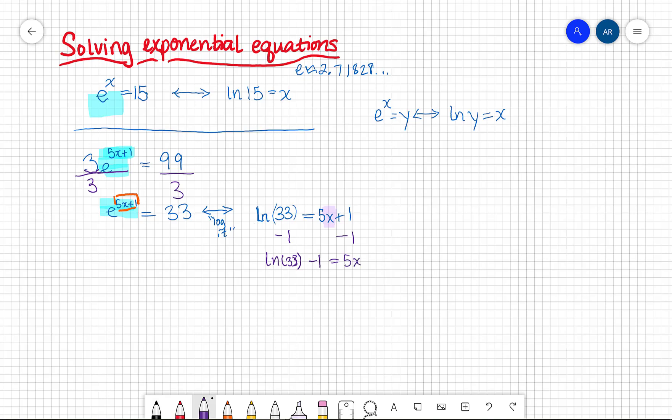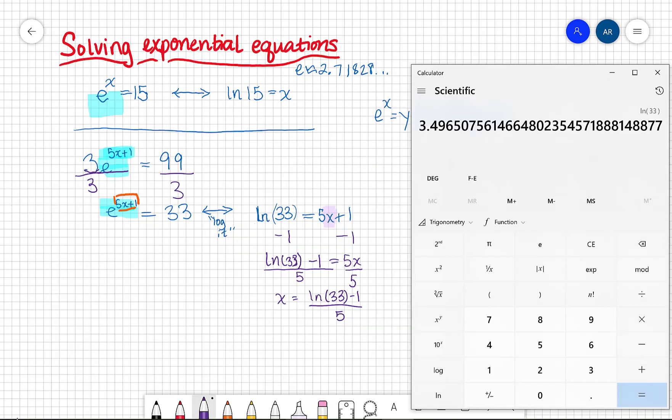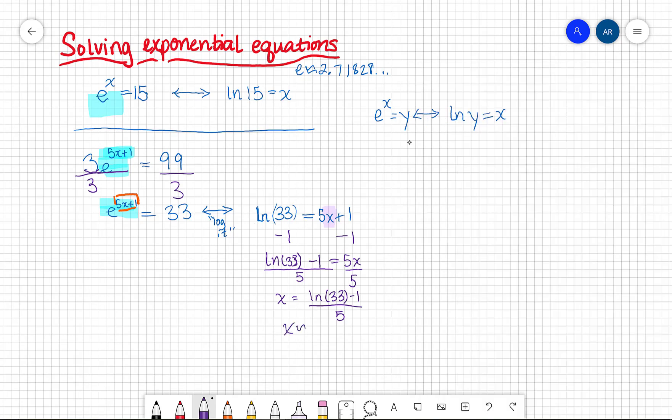And now to get x by itself, I divide by five. So at the end of the day, x equals the natural logarithm of 33 minus one, all divided by five. And that's a calculation I can run on a calculator. You can see it says ln 33. And then I'm going to subtract one and divide by five. So I'm getting this exponent of x is about 0.499.